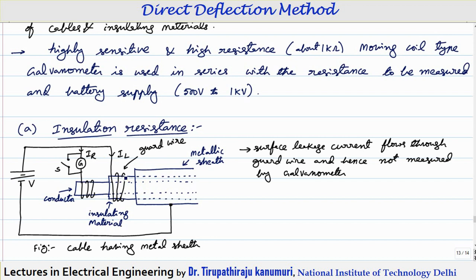Gradually the capacitor will charge. Initially the current will be very high and gradually it will settle down, and after some time the capacitor will get completely charged. After that the capacitor current will be equal to zero because it is a DC supply. That is why you have to take proper care for the initial inrush current — initially it will be very high and gradually it will decrease.